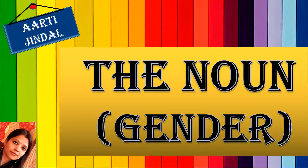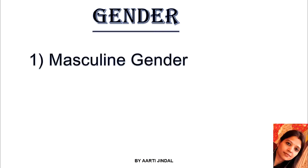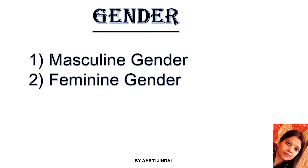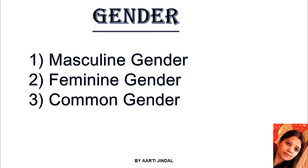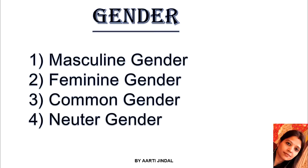Let us start with our topic, that is gender, which comes under noun. Whatever nouns we are talking about, these nouns are considered under some different types of genders. There are mainly four different types of gender: first is masculine gender, second is feminine gender, third is common gender, and fourth is neuter gender. Masculine gender is also termed as pull-ling in Hindi, feminine gender is termed as sri-ling in Hindi, common gender is termed as u-bha-ling in Hindi, and neuter gender is termed as napun-sik-ling in Hindi.